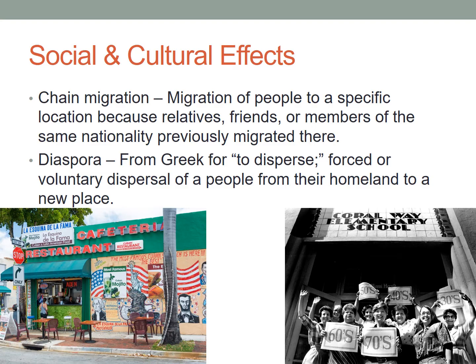When the Great Migration occurred out of the American South, blues music moved to northern cities with African Americans. And as Irish, Italian, and German immigrants moved to the United States, the Roman Catholic population began to increase, which contrasted with the predominant Protestant population already in the US. When people make big international migrations, they are often pulled to specific areas with family members, friends, or people of the same nationality — a process known as chain migration. Another type of migration that often exhibits chain migration is a diaspora. A diaspora, from Greek for 'to disperse,' is a forced or voluntary dispersal of a people from their homeland to a new place.